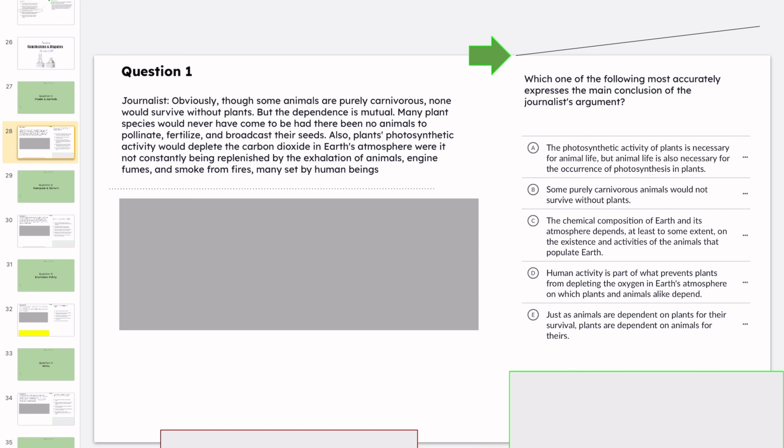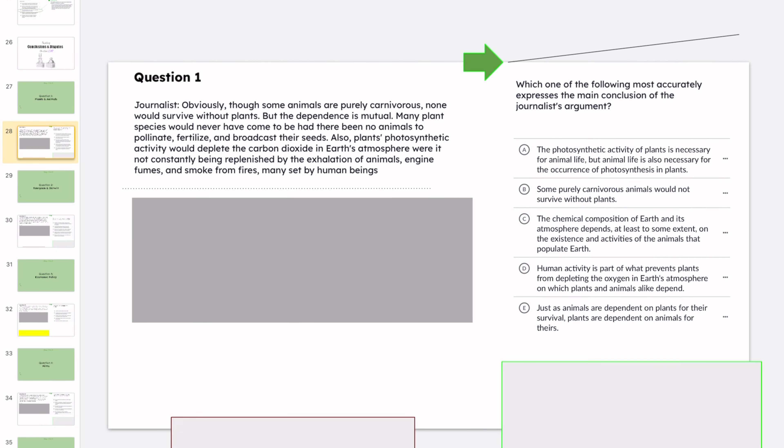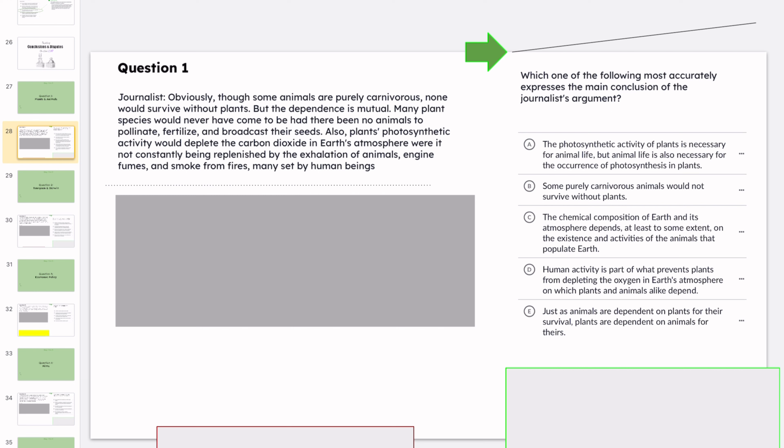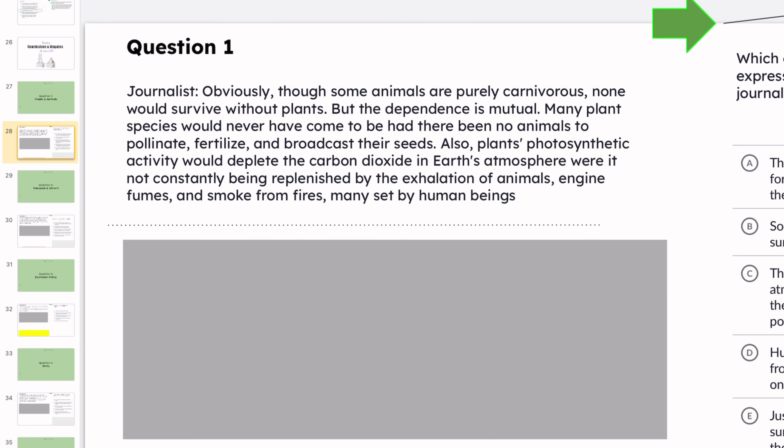So let's take a look at this one. In this one, we're supposed to accurately express the main conclusion of the journalist's argument, their claim, their conclusion. So here the journalist says, if you want to take a moment, you can pause the video, read it for yourself. That's what we do in our cohort.